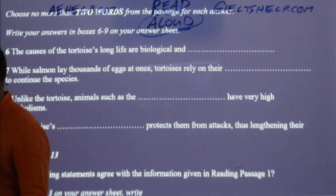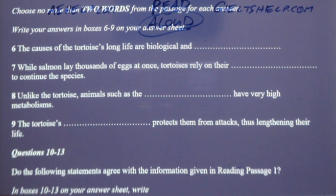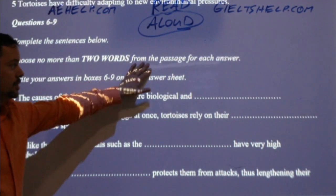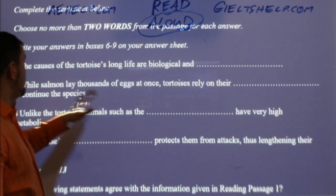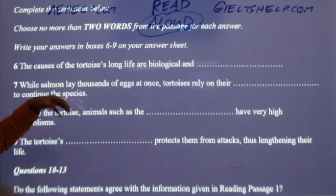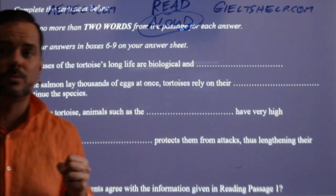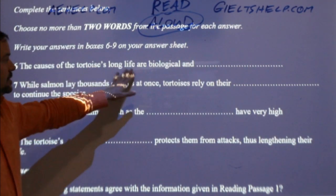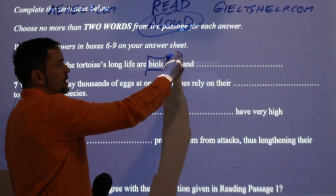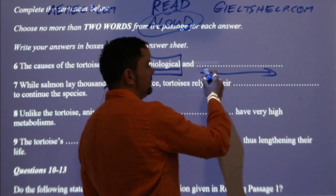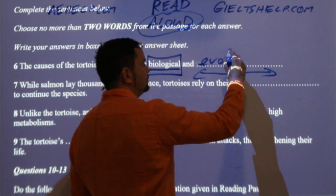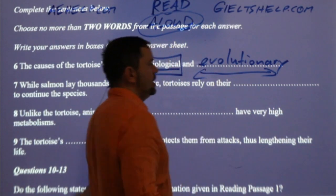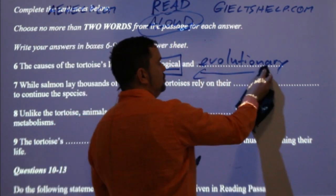Remember students, memory can be trained and you should train memory for the IELTS exam. So here we simply have to fill in the blanks — choose no more than two words from the passage. These ones usually follow the order of the passage, so number six will be earlier in the passage. The causes of the tortoise's long life are biological and... I know the answer for this one.